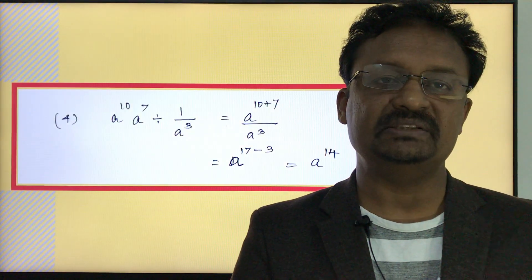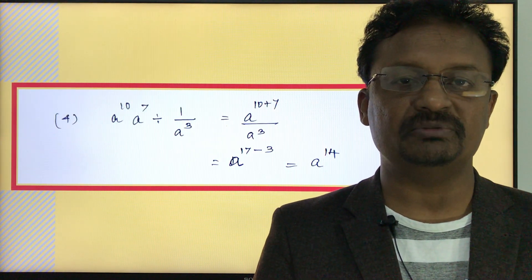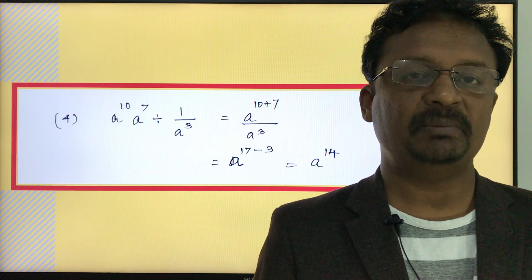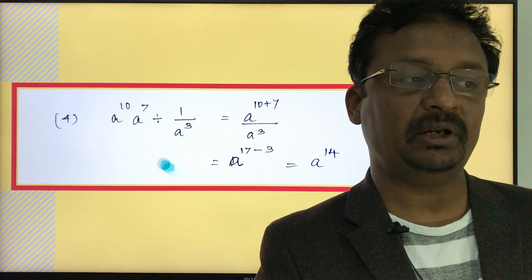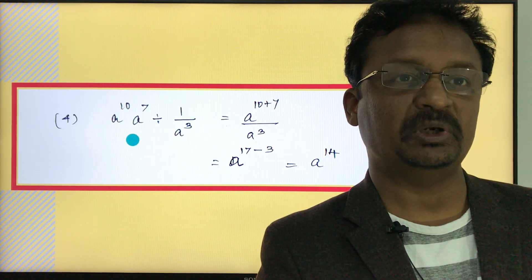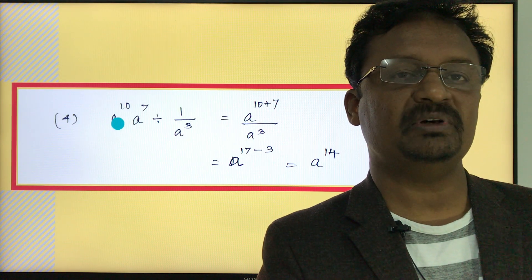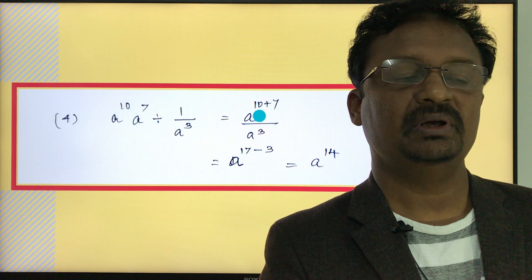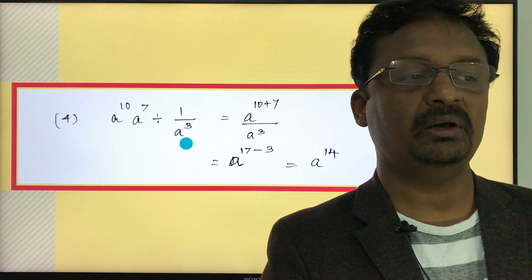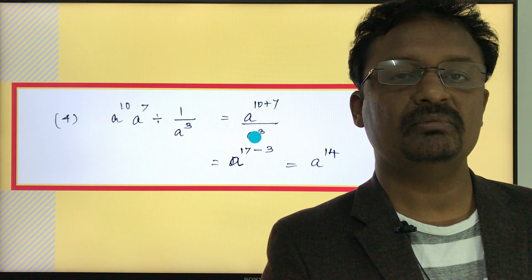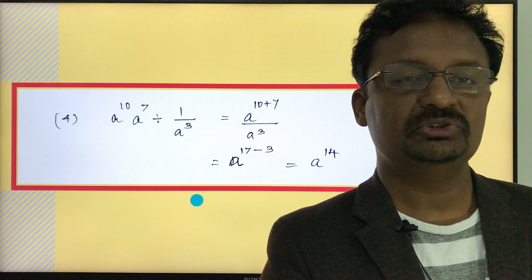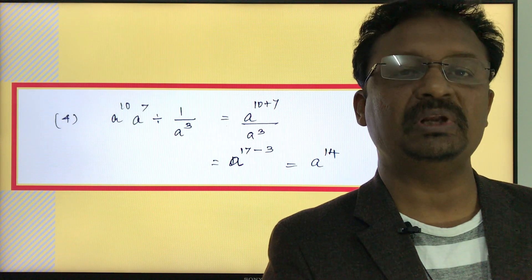Another example: simplify a to the power of 10 times a to the power of 7, divided by a to the power of 3. First apply the product rule on the numerator: a to the power of 10 plus 7 equals a to the power of 17. Then apply the quotient rule: a to the power of 17 minus 3 equals a to the power of 14.